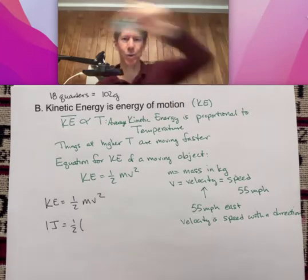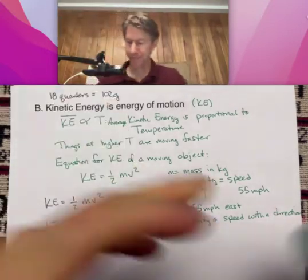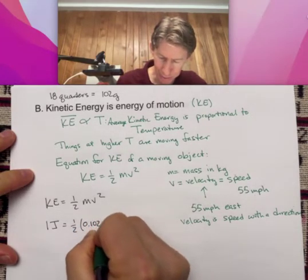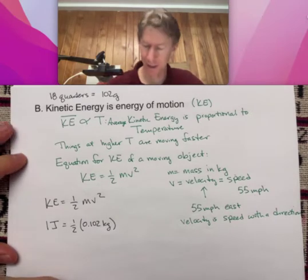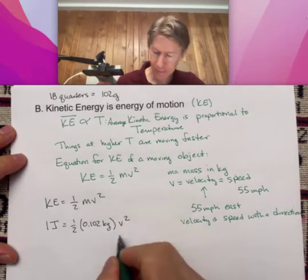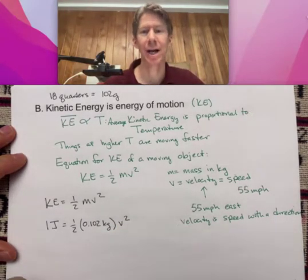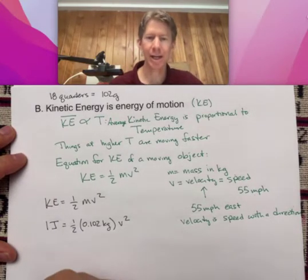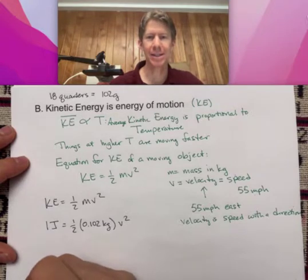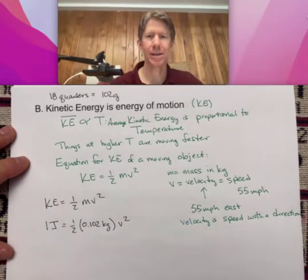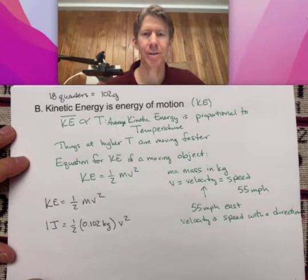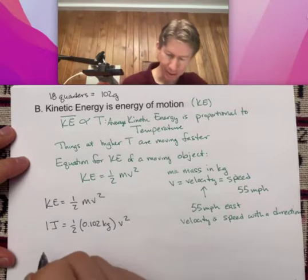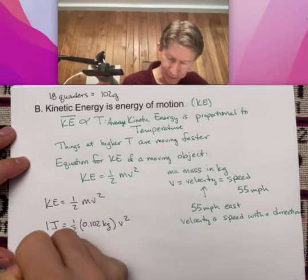How fast would these be moving in order to get, so we have 0.102 kilograms. That's 102 grams. And this time, v, our velocity, is going to be what we're solving for. Because we're going to try and ask the question, how fast does the 0.102 kilograms have to be traveling to have kinetic energy of one joule?